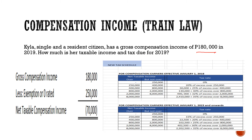What if yung income ni Kyla na ₱180,000 was earned in 2019? Kanina, yung ₱180,000 na gross compensation ni Kyla is na-earn niya 2015, kaya NIRC yung tax law that will apply. What if naman yung income niya is ₱180,000 na earned noong 2019? Since year 2019, ang papasok na dito na tax law is the Train Law — effective January 1, 2018, ang law implemented for the taxation system in the Philippines will be the Train Law. Under the Train Law, may difference na siya from the previous NIRC, at iba din yung tax schedule niya.